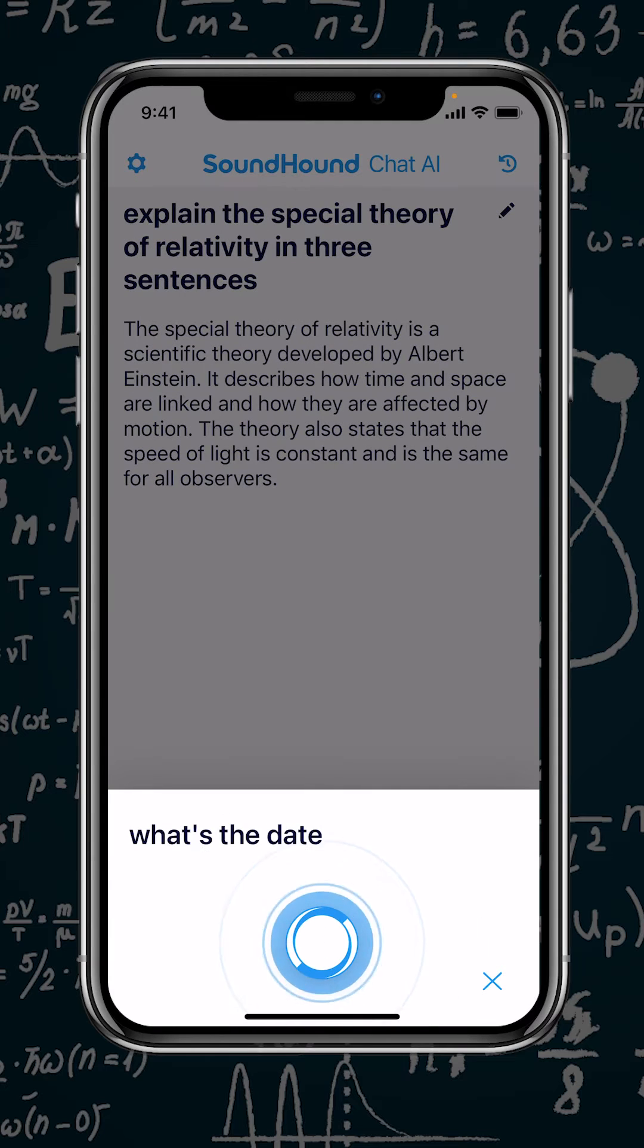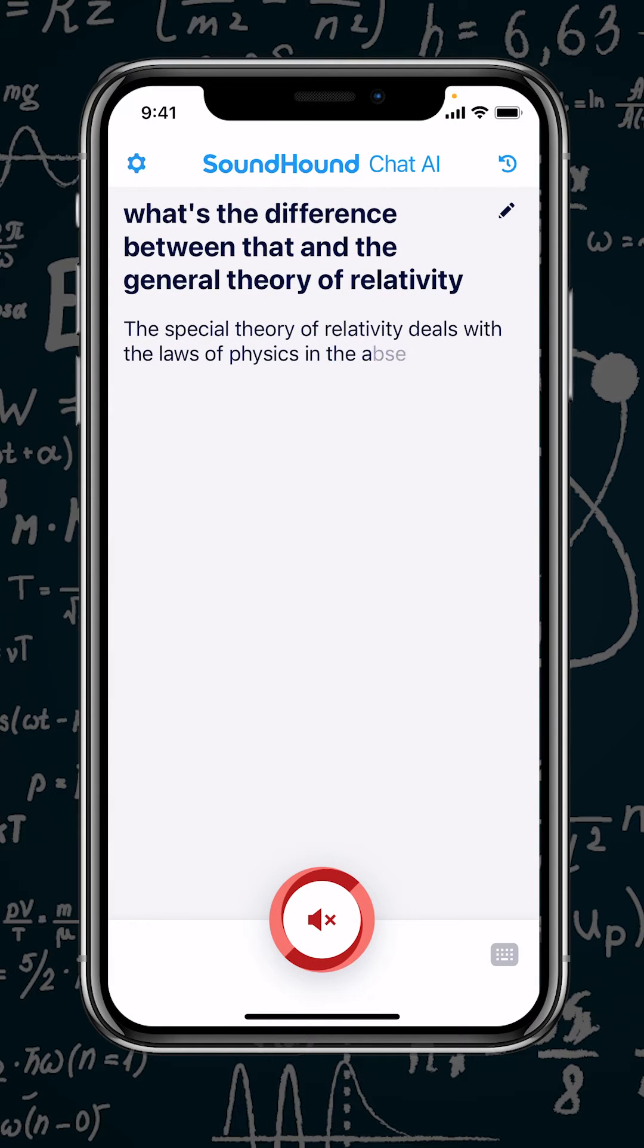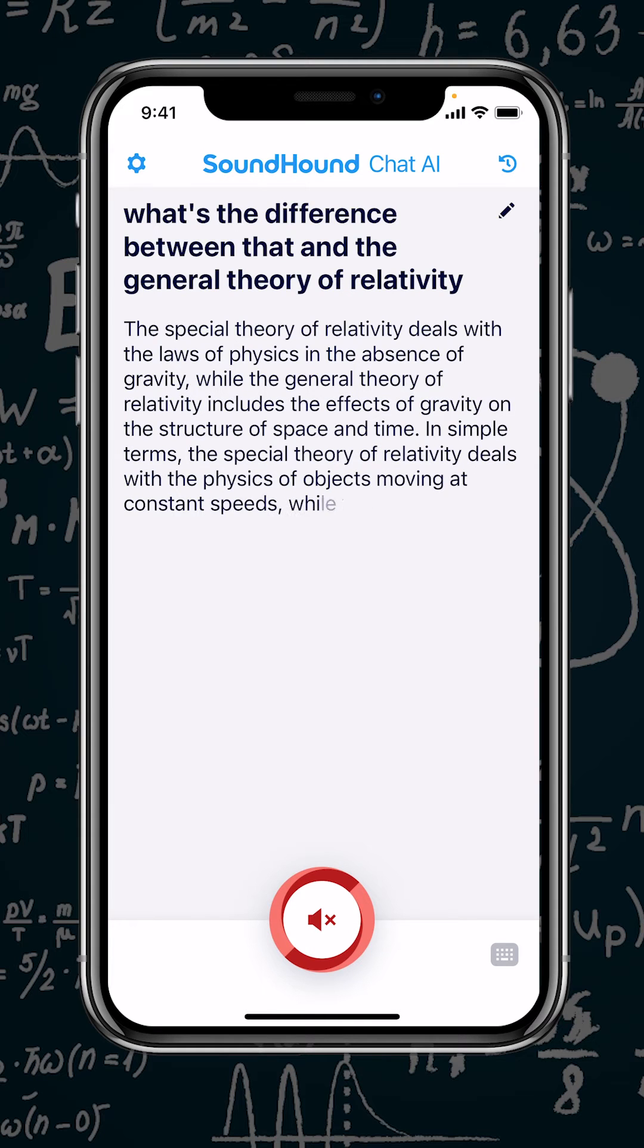What's the difference between that and the General Theory of Relativity? The Special Theory of Relativity deals with the laws of physics in the absence of gravity, while the General Theory of Relativity includes the effects of gravity on the structure of space and time.